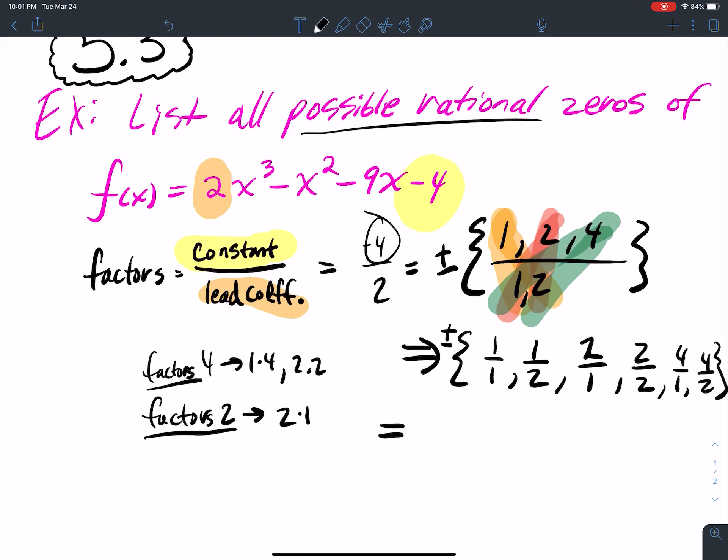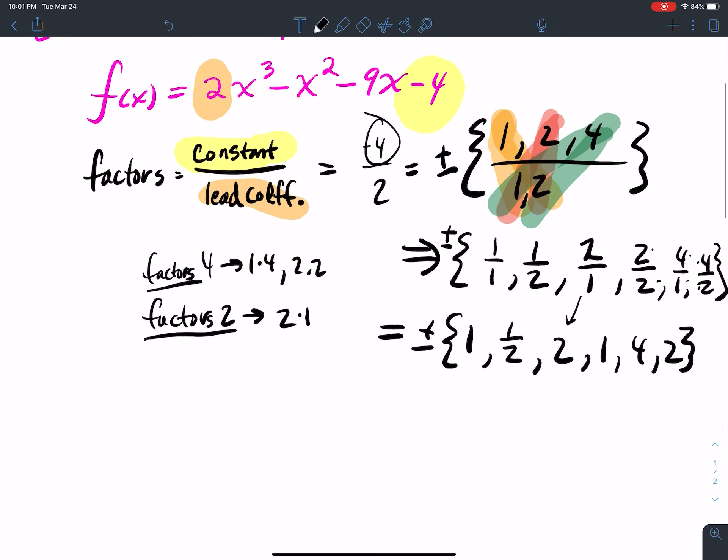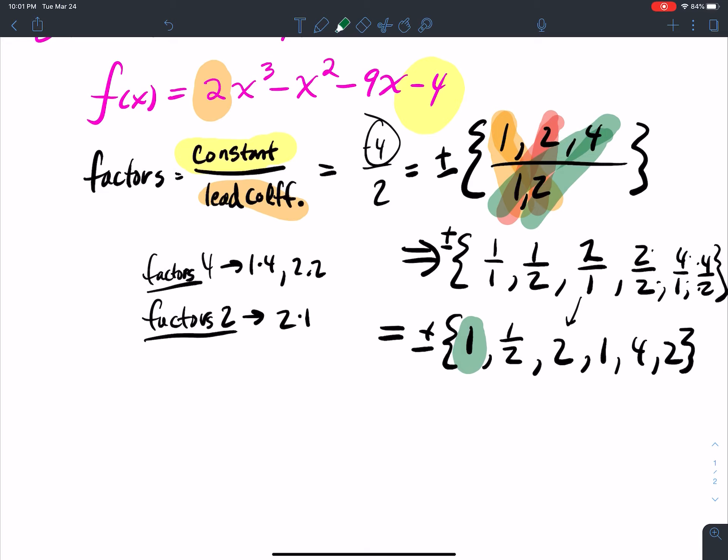Now I need to simplify. 1 over 1 is just 1. 1 over 2, that's still 1 half. 2 over 1 is just 2. 2 divided by 2 though is 1. 4 divided by 1 is 4. And 4 divided by 2 is 2. You guys see anything that repeats in there? 1 and 1 repeat. And then 2 and 2 repeat. So get rid of the things that repeat. So all I need is just one copy of each. So here is my answer that they're going to be looking for.